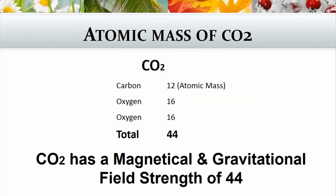CO2 is made up of one carbon and two oxygens. The atomic mass of carbon is 12, and the atomic mass of oxygen is 16. When we add that up we get a total of 44. So essentially what we're saying is that CO2 has a magnetical and gravitational field strength of 44.